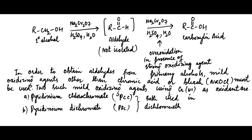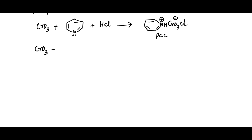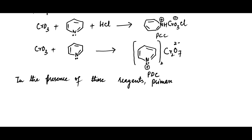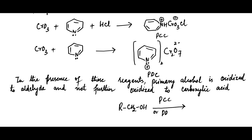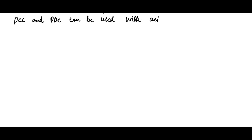Both PCC and PDC are used in dichloromethane solvent. PCC is formed from the reaction between pyridine, chromium trioxide, and hydrochloric acid. PDC is formed from the reaction between chromium trioxide and pyridine. In the presence of these mild reagents, primary alcohol is oxidized to aldehydes and not further oxidized to carboxylic acid. For example, this primary alcohol on treatment with PCC or PDC gives an aldehyde, which doesn't undergo further oxidation to carboxylic acid, whereas the same alcohol on treatment with chromic acid or bleach gives carboxylic acid. These mild oxidizing agents can be used with acid-sensitive alcohols also.